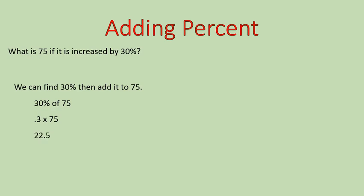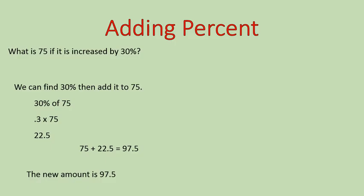0.3 times 75 gives us 22.5. I need to remember that I'm not done yet. I can't say the answer is 22.5, because the question said: what is 75 if it's increased by 30%? This is just the 30%. So I have to remember to add that on. I'm taking my original amount, 75, and adding that 22.5, and I get my new amount of 97.5. So I would say the new amount is 97.5. That is one way to do it — you can calculate the percent and then add it on.